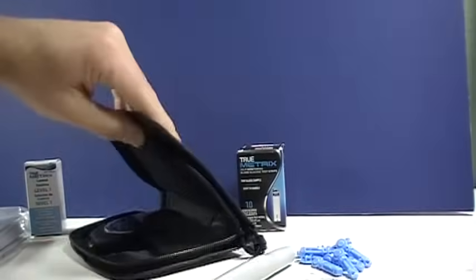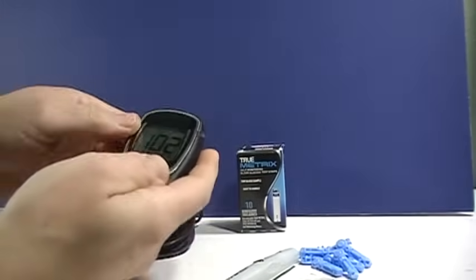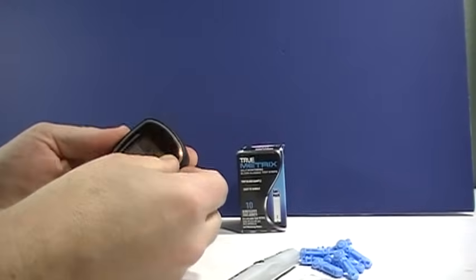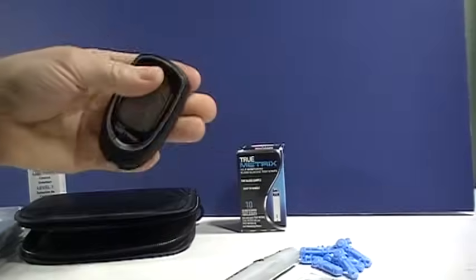Here's the meter itself. The nice thing about the True Metrics, it comes with a date and time already loaded. You can remove the little protective plastic piece there.